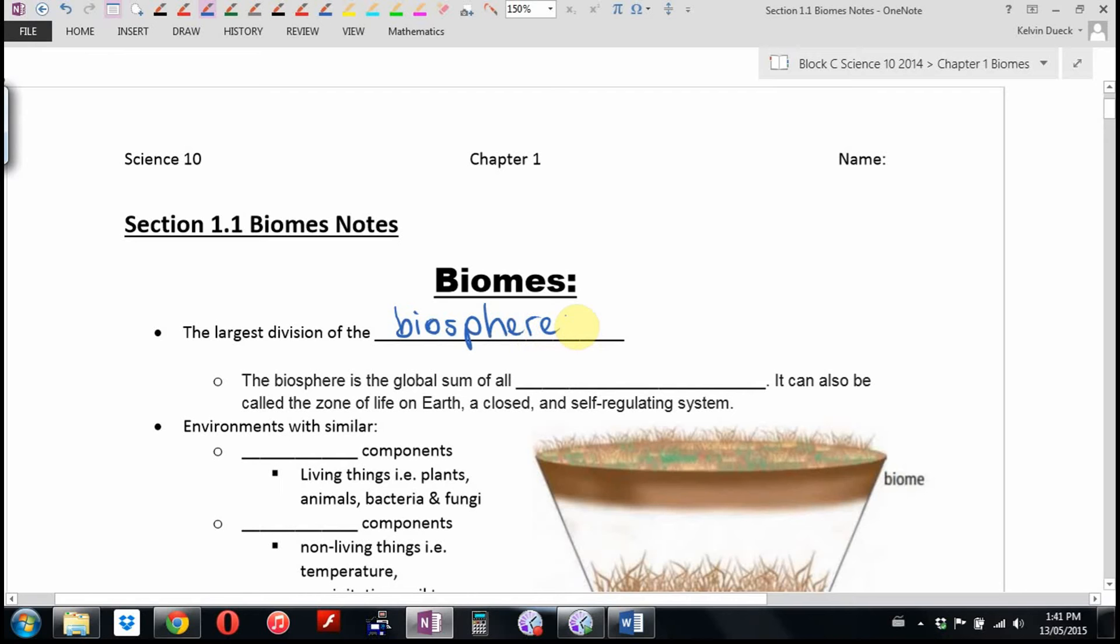What does the word sphere mean? Ball-shaped, not just circle, three-dimensional. What does bio almost always mean? Living.